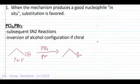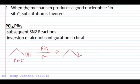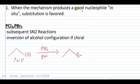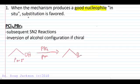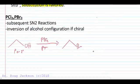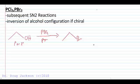If a good nucleophile is produced in situ at the same time as the reaction is occurring without us doing anything, substitution will be favored. Let's first look at phosphorus trichloride and phosphorus tribromide.